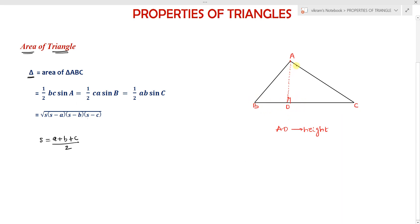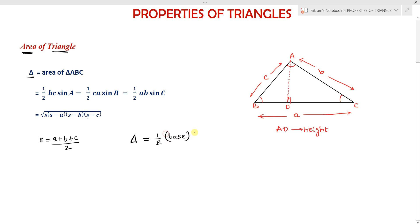BC is the side of the triangle opposite to angle A, represented by small a. The side opposite to angle B is small b, and opposite to angle C is small c. The area of a triangle delta equals one-half times base times height, where the base is BC and height is AD.